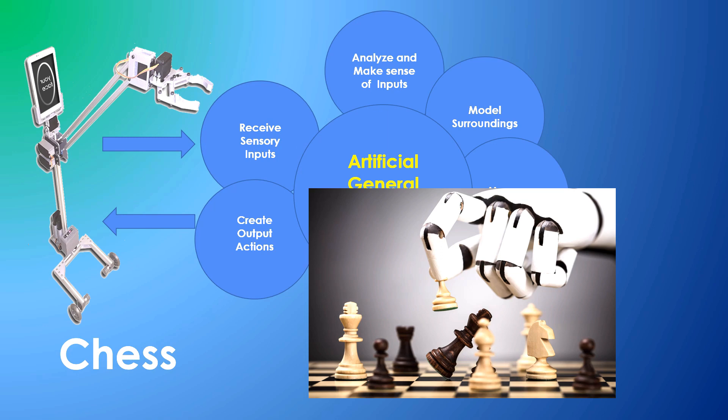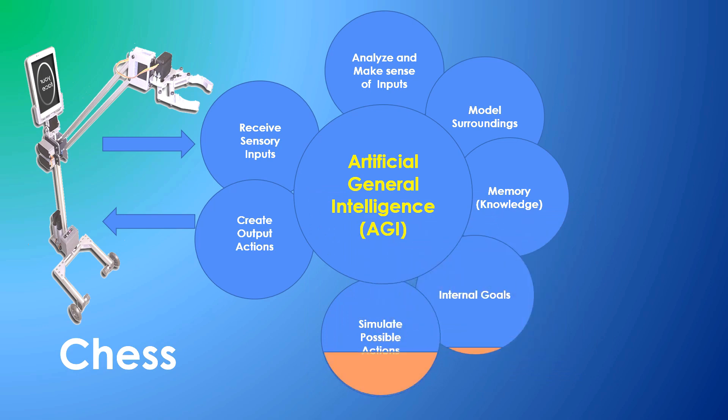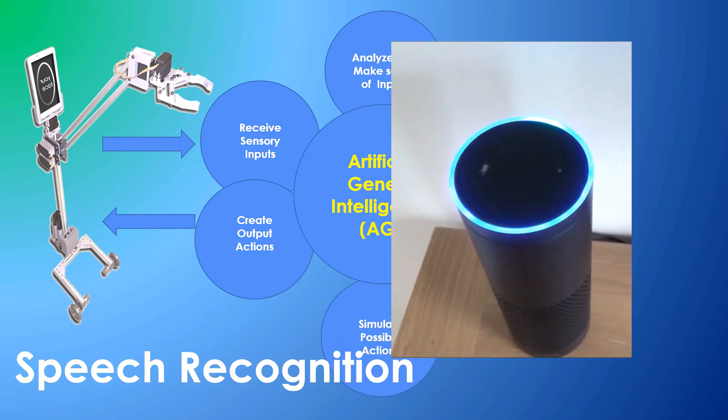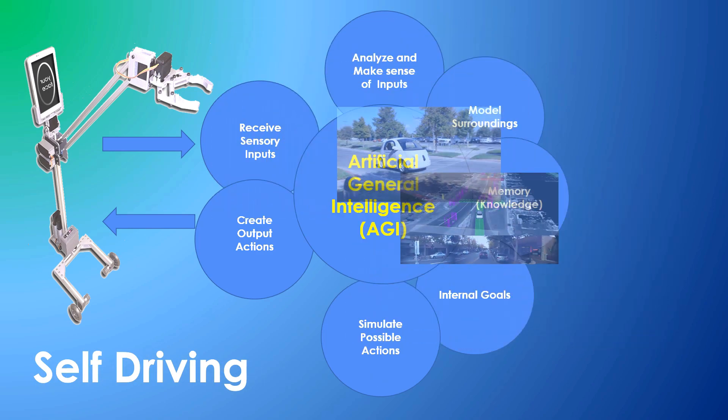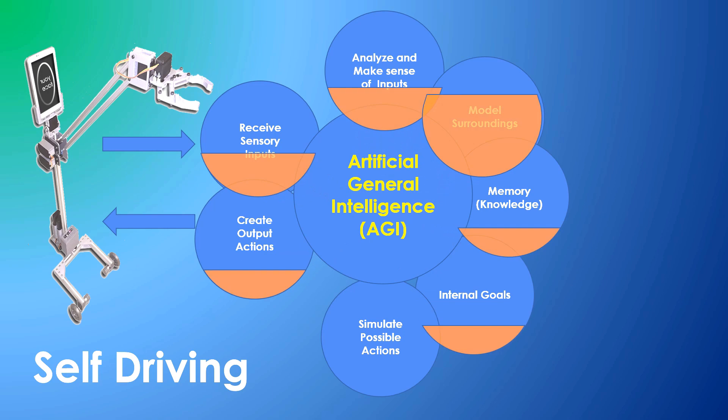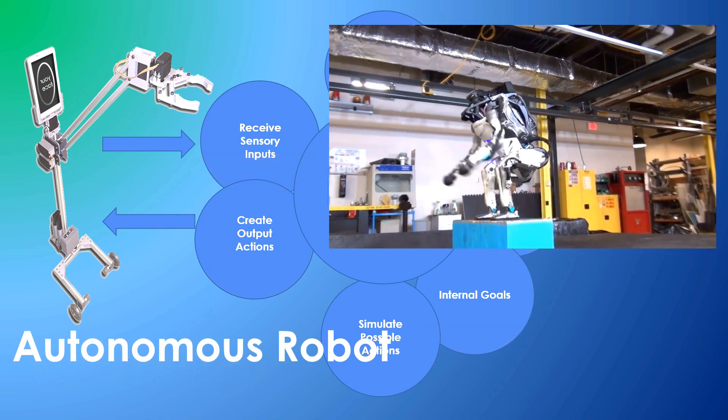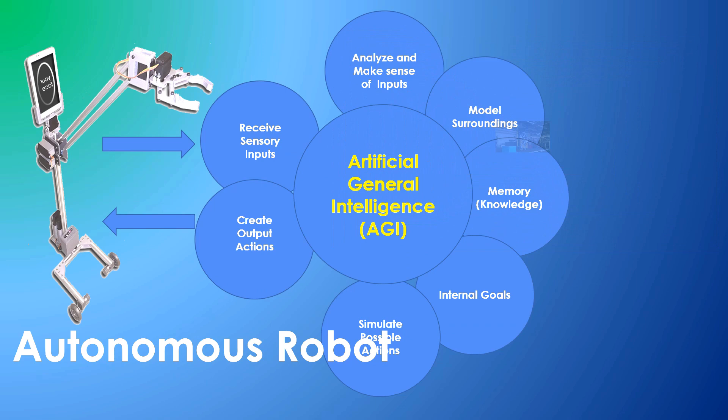Chess playing programs, for example, are focused on simulating possible actions and evaluating them against goals. A speech recognition program is good at sound and input analysis. Self-driving cars maintain an excellent continuous model of their environment, while autonomous robots do a little bit of everything.